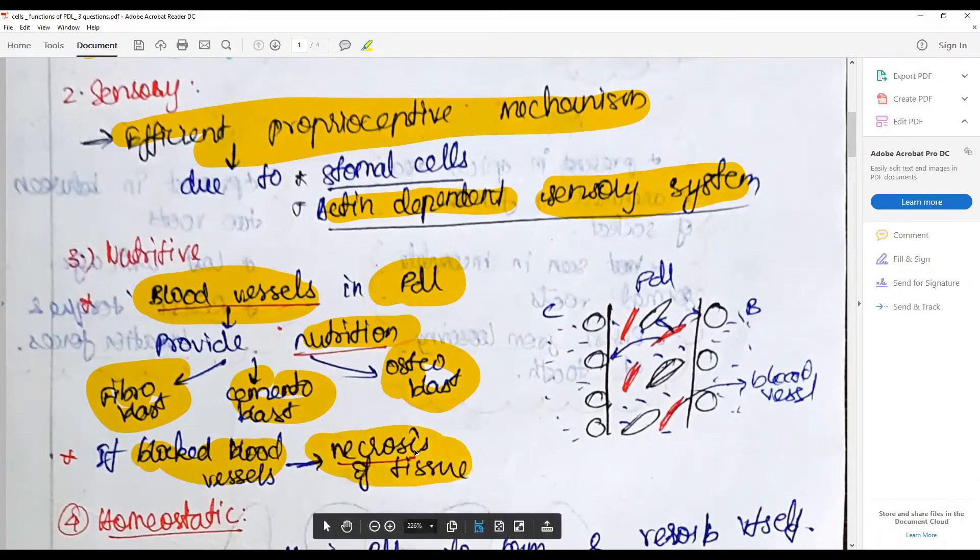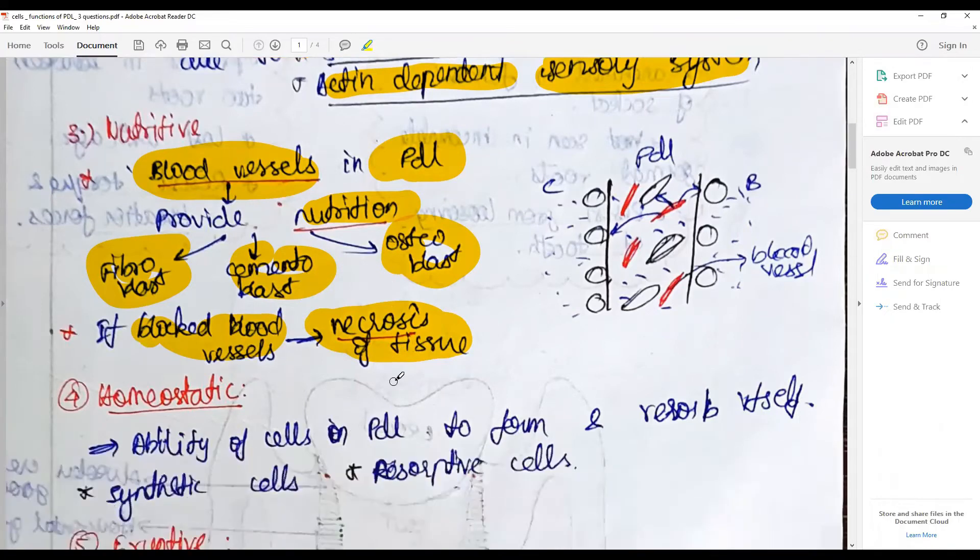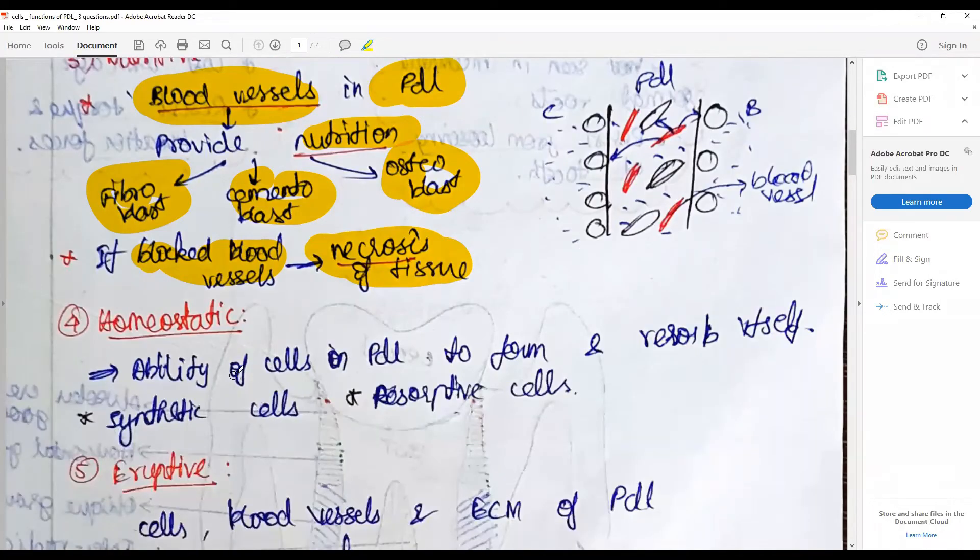Homeostatic: the ability of the cells in PDL to form and resorb itself. They can synthesize and resorb—for example, fibroblasts and osteoblasts. They have the ability to resorb when needed and synthesize the cells, so they can function as synthesizers or resorptive cells together to maintain homeostatic mechanisms.